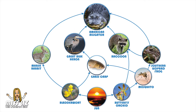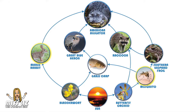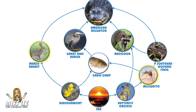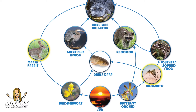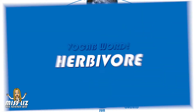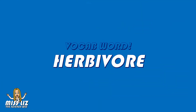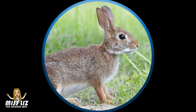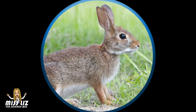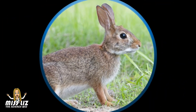Many organisms have to eat something in order to get energy. In our food web the organisms in yellow are called herbivores. An herbivore is an organism that only eats plants. Herbivores are considered primary consumers making up the second level of the energy pyramid.